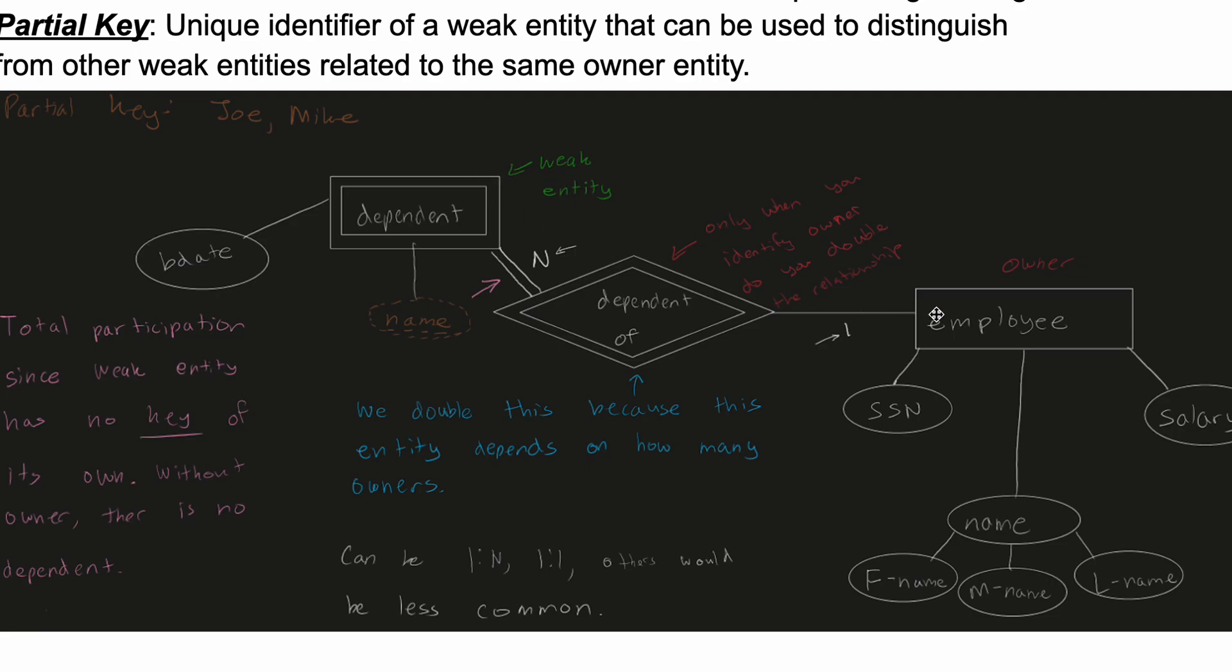There's this relationship here. Only when we identify the owner do we use the double for their relationship. So a regular relationship is just a diamond, and then the double is only when we identify the owner.